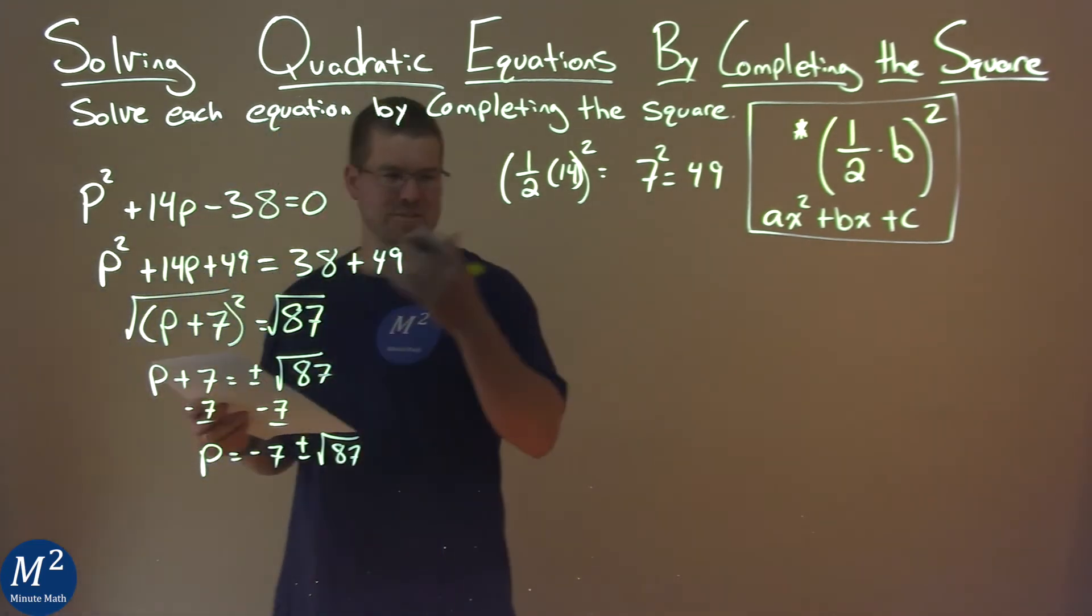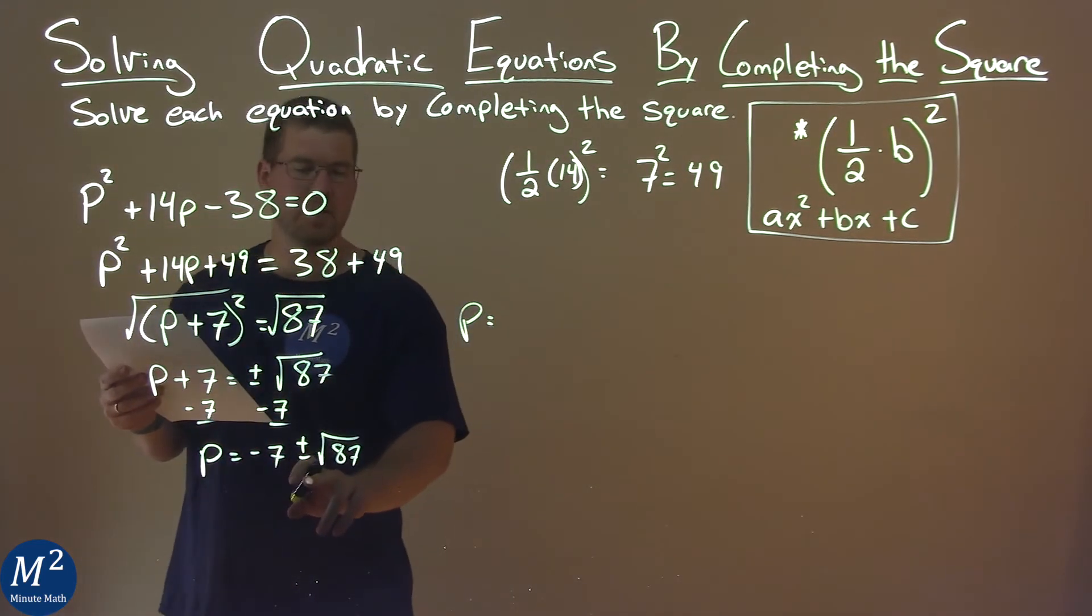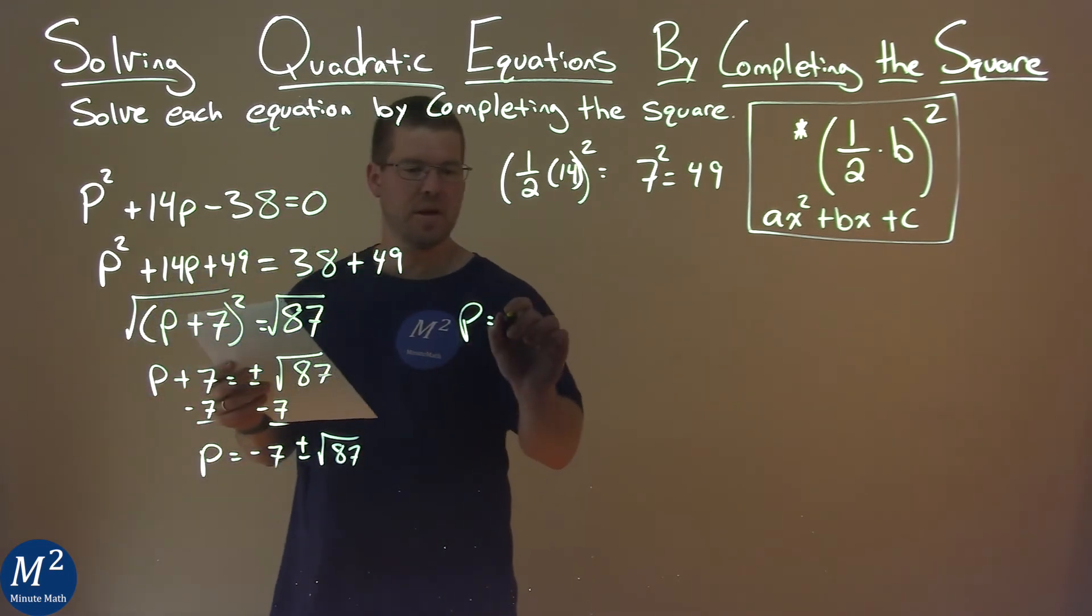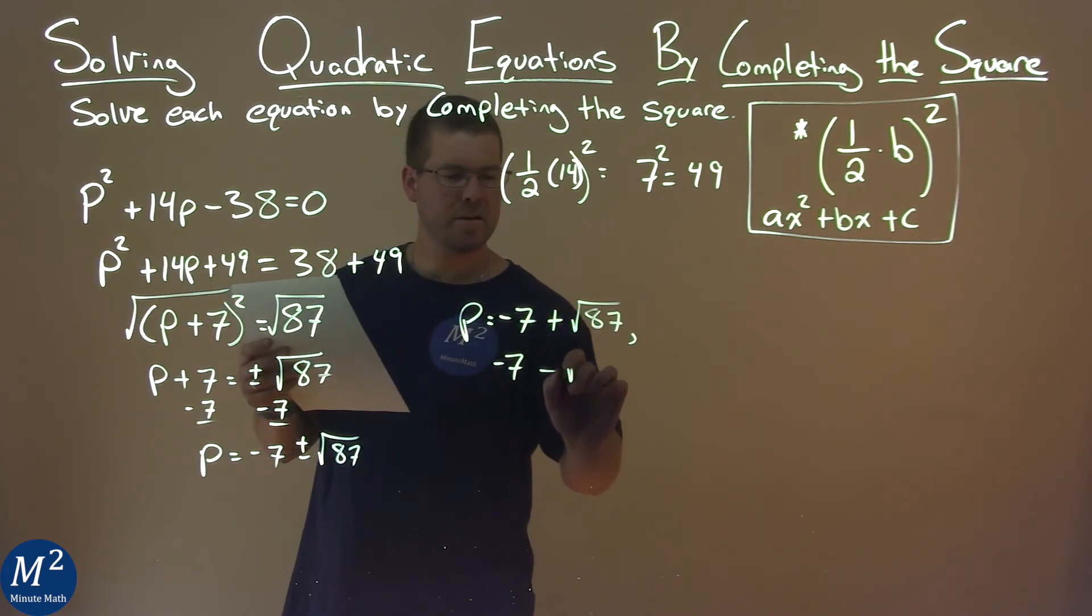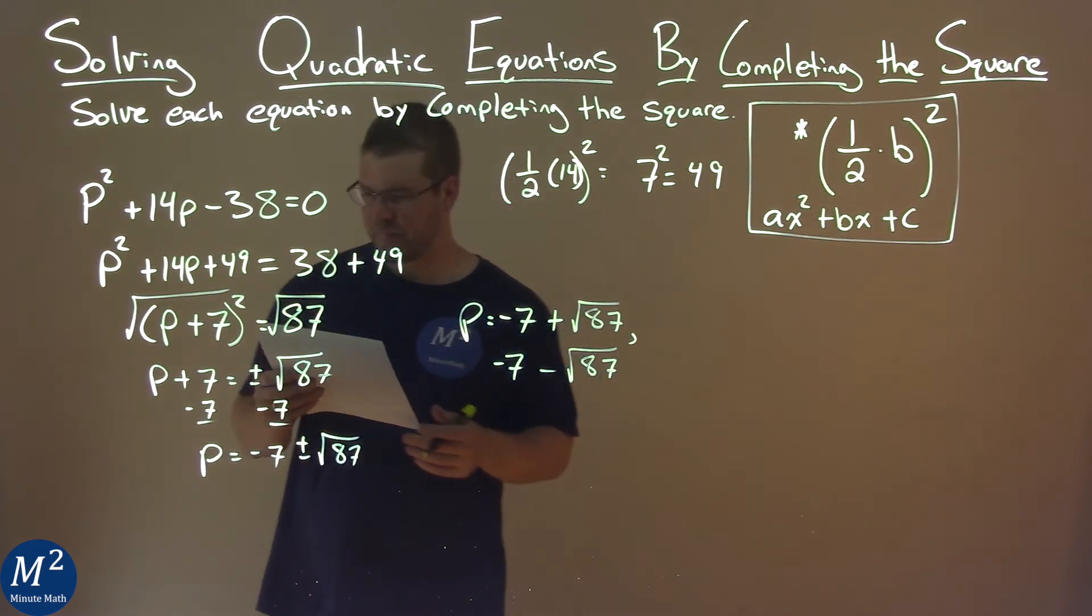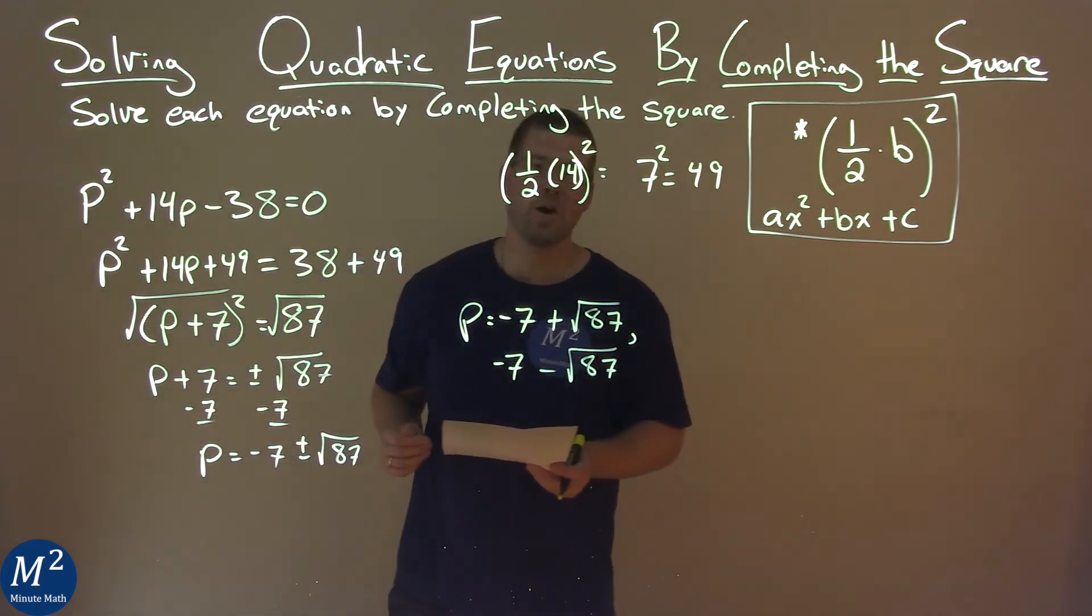We can write this as two statements. P equals the plus and minus, right? So we can write each one individually. Negative 7 plus the square root of 87, and negative 7 minus the square root of 87. And that's actually our final answer.